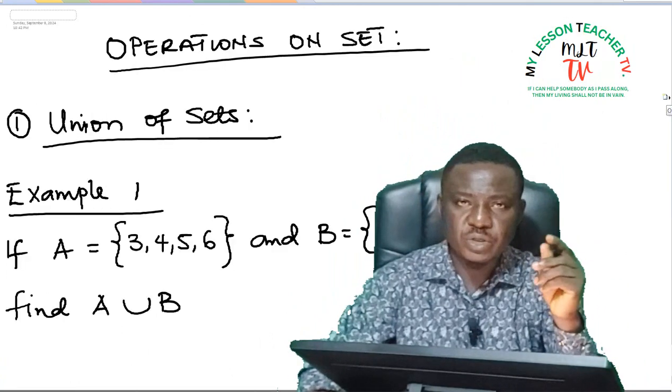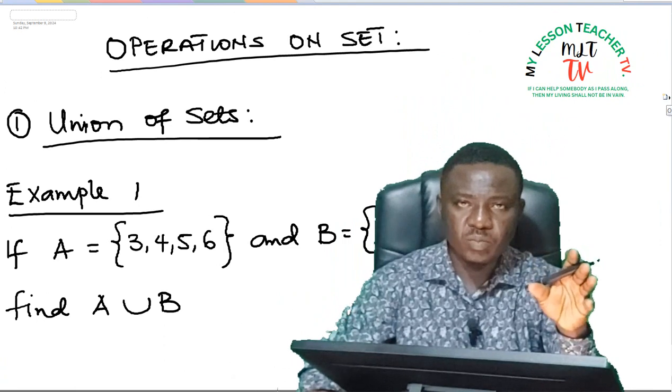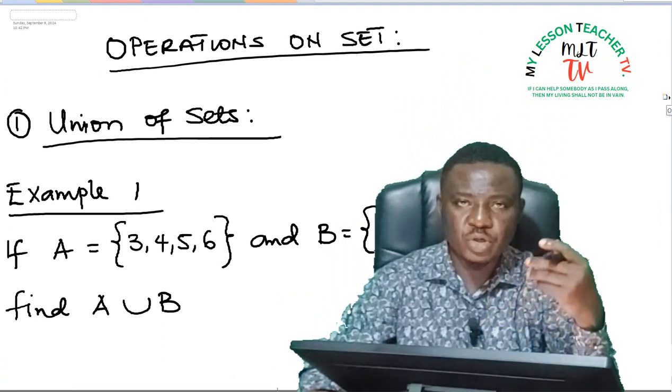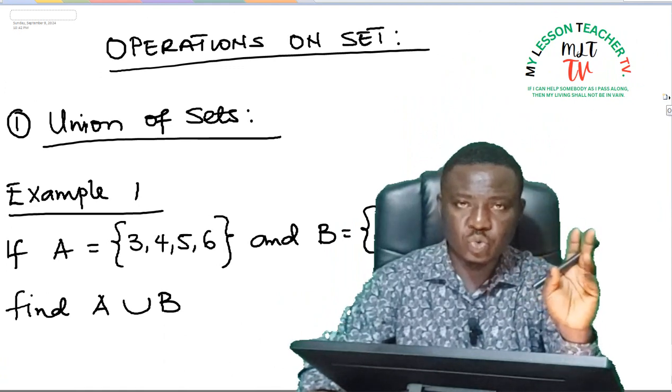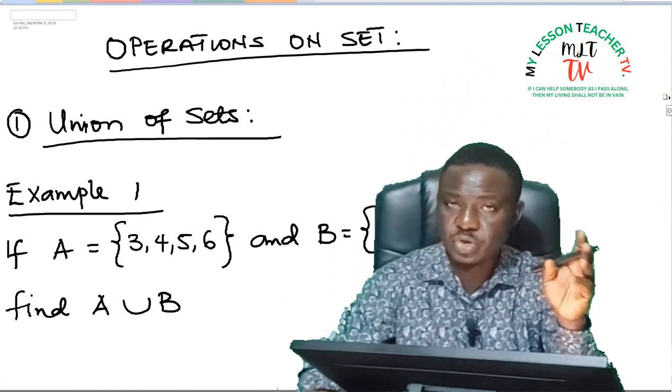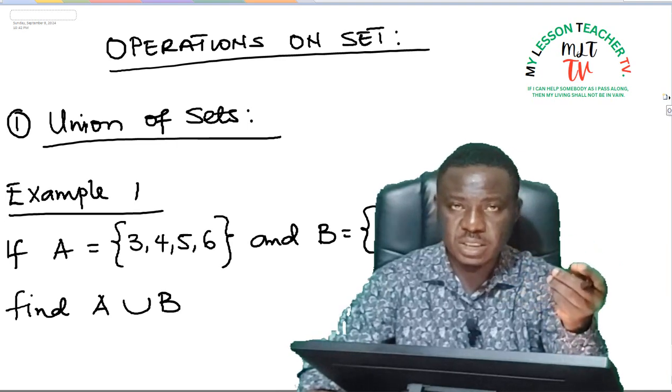In today's class we shall be looking at the operations on set. Like algebra, we equally have operations we carry out on set, and they are just two which we refer to as the union of sets and the intersection of sets.